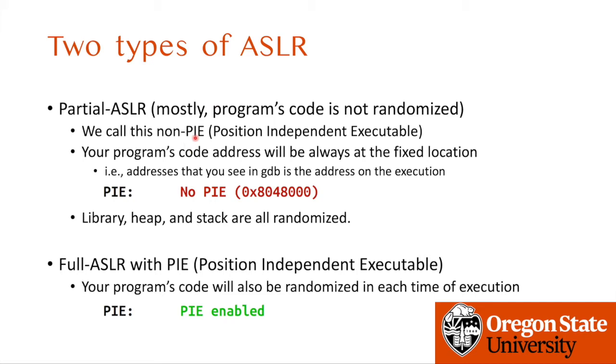PIE stands for Position Independent Executable. This property is essential for allowing code to be placed at any random base address. So if we do not have that property, randomization of the code and data area is not available. If we have a non-PIE binary — you can check with the checksec command — if it says no PIE, then the system will randomize the library, heap, and stack addresses, but it will never randomize the code and data section for the program. So you can reuse some addresses from this fixed location.